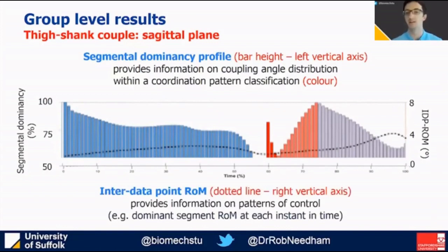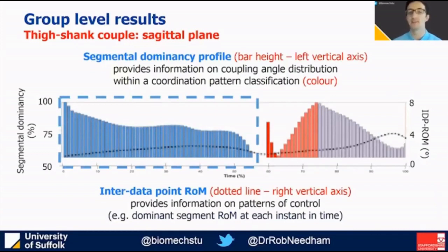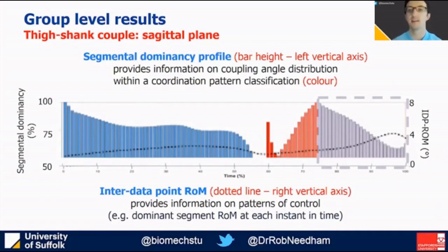In our example, the dotted line represents the inter-data-point range of motion of the dominant segment. Looking at our group mean results at the thigh-shank couple, we see an antiphase and thigh-dominated coordination pattern during the majority of both the eccentric and concentric phases, where the level of dominancy tends to decrease as the phase progresses due to increasing shank contribution, despite the corresponding increase in thigh range of motion.